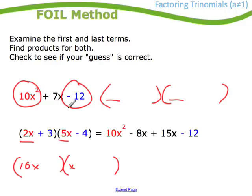Then I look at the last number, the minus 12, and look for factors of minus 12. So in this case, I plugged in a plus 3 and a minus 4, but I could have put in a minus 6 and a plus 2 because they multiply to 12 as well.